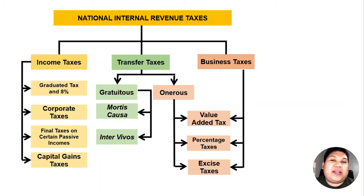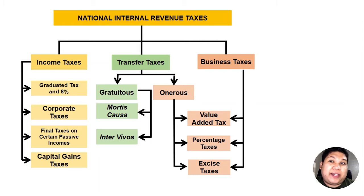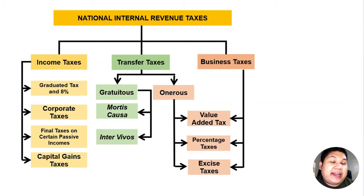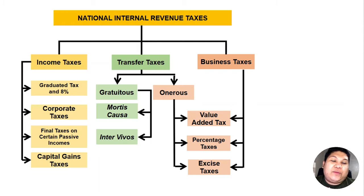Value-added tax is a consumption tax imposed on goods or services that we purchase or sell on the market. For example, when we purchase food at a fast food restaurant, there is a 12% add-on tax on the price paid to the seller — that 12% is the VAT. We will discuss more about VAT in succeeding videos.